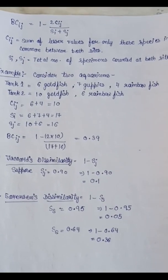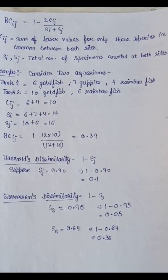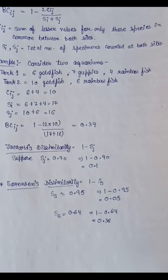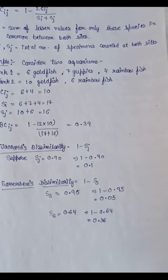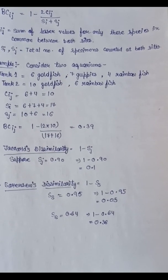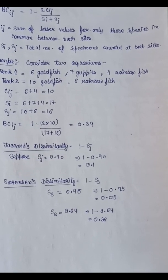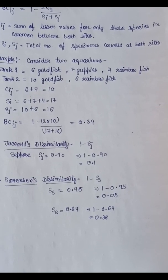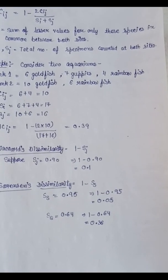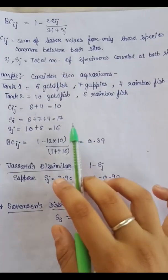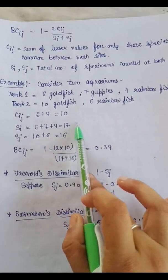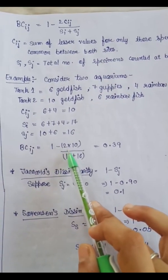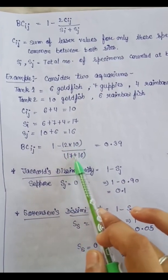To calculate Bray-Curtis, first calculate Cij, the sum of only the lesser count for each species found in both sites. Goldfish are found on both sides, so the lesser count is 6. Guppies are only on one side, so they can't be added. Rainbow fish are in both, lesser count is 4. So Cij = 6 + 4 = 10. Si = 17, Sj = 16. BCij = 1 - (2×10)/(17+16) = 0.39.